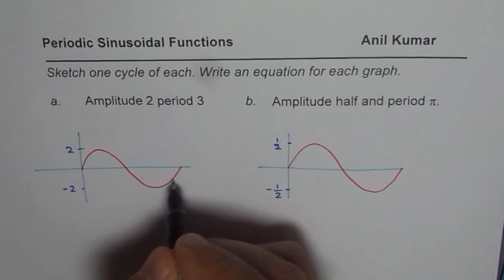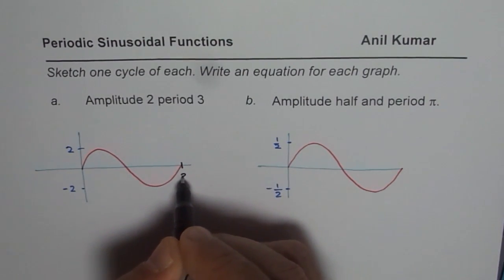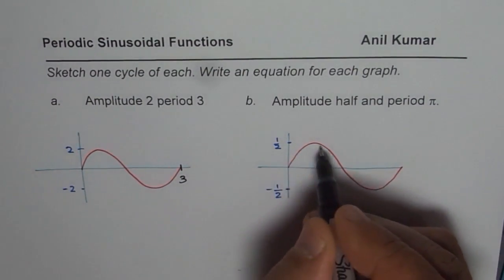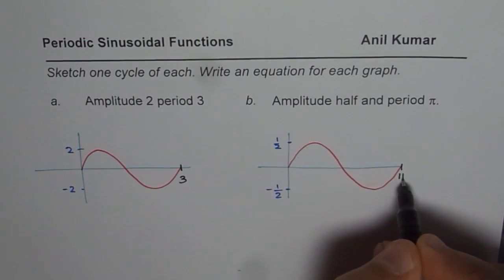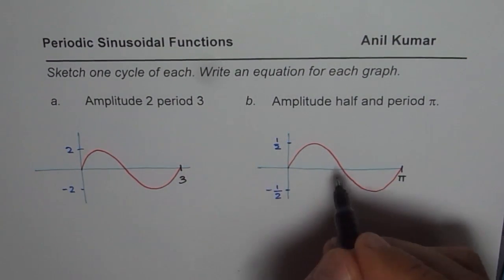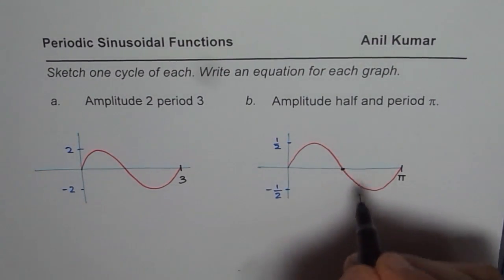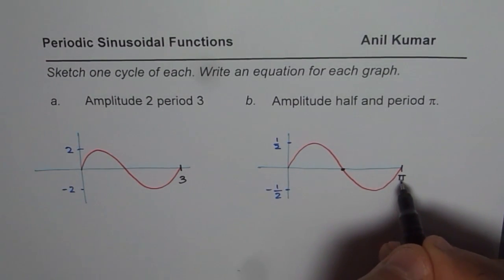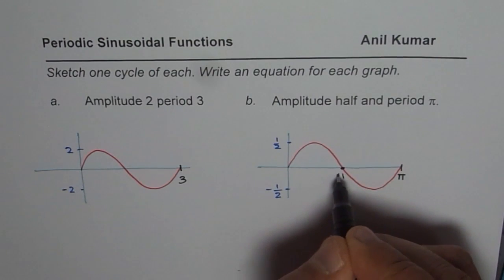Let's look into period. Period means time taken from here to there and that should be 3. In this case, period from here to there is pi. So we got the time period for us. Now, if you want to get into details of this graph, what should you do? You can actually go and label some more points.